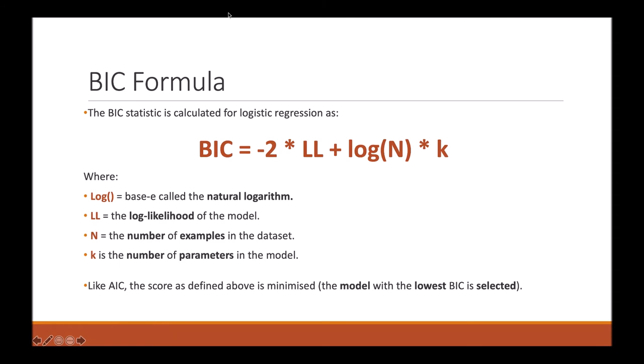BIC is calculated for logistic regression using the below formula, where log is the natural logarithm, LL is the log-likelihood of the model, N is the number of examples in the dataset, and K is the number of parameters in the model.